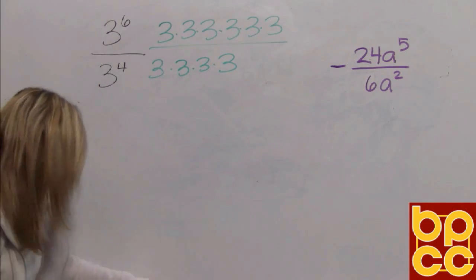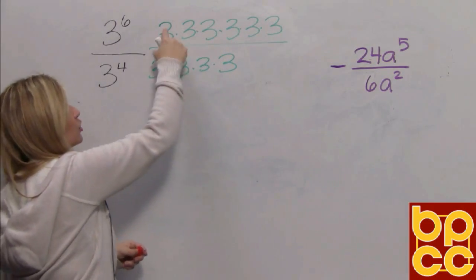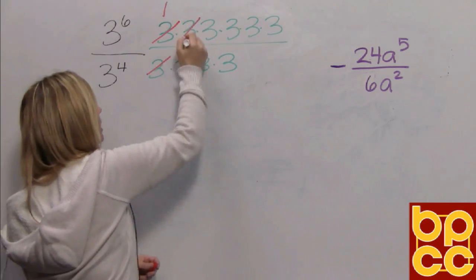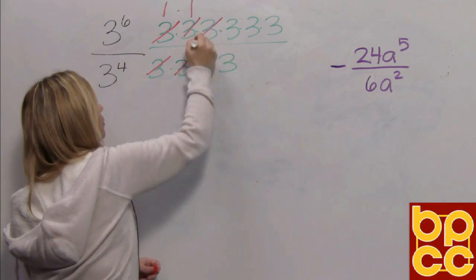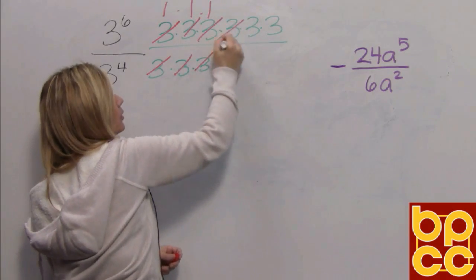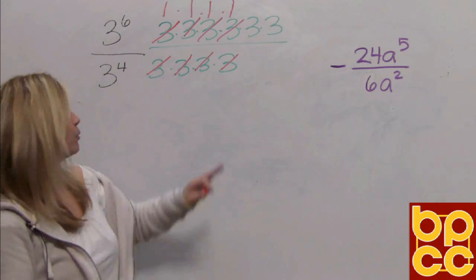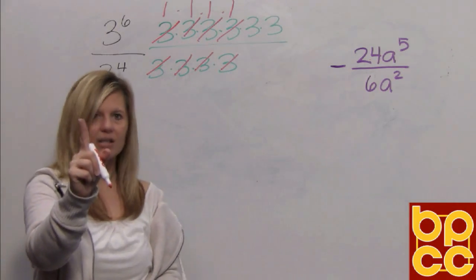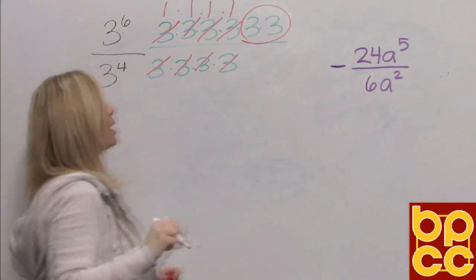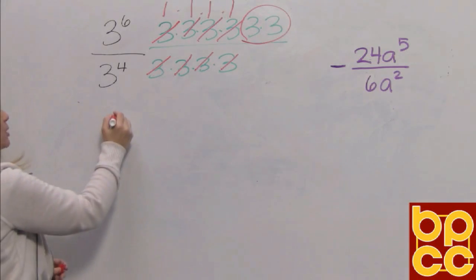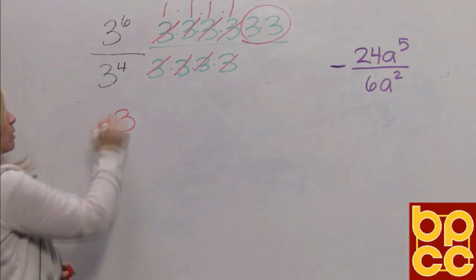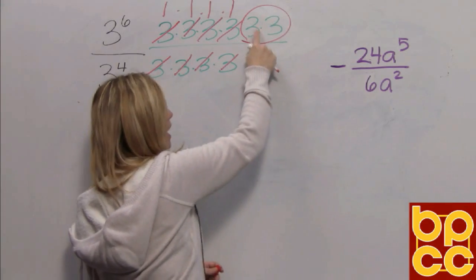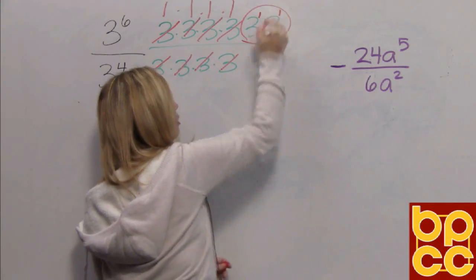Now you look, the fraction bar means to do division. We know three divided by three is one — and that happens four times, canceling out four threes. What we're really left with is three times three, which can be written as three squared, because when you're multiplying the same base, you add those exponents.